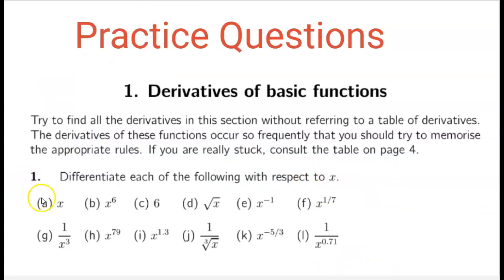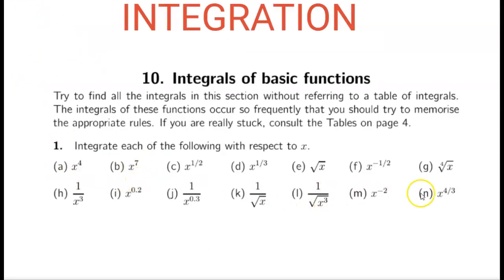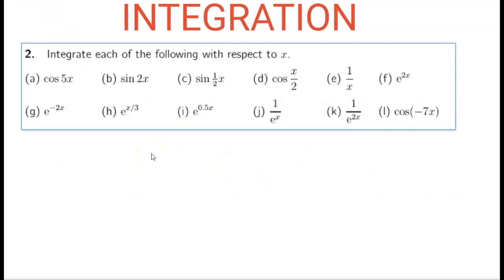Now try questions one part A all the way to L. For question L, you need to move the expression up so it becomes x to the power minus 0.7, or x to the power minus one-third, or x to the power minus three — then integrate as normal. Note: although the question says differentiate, I'd like you to integrate these functions instead. Try integrating each of these expressions.